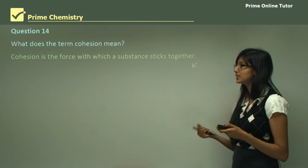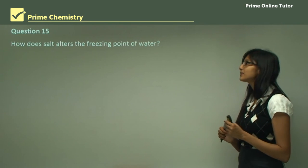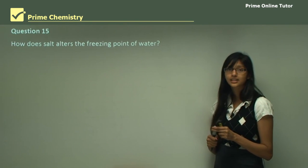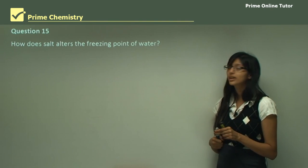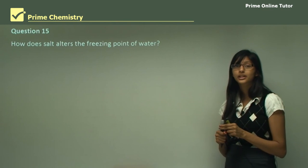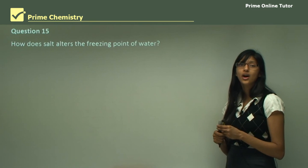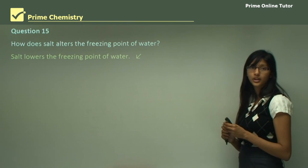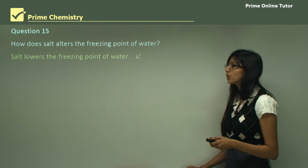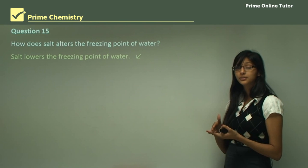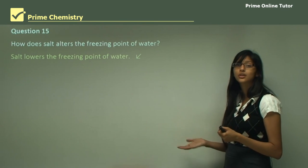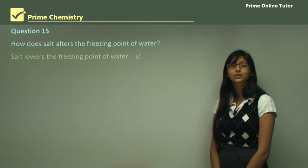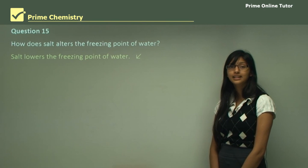Question 15 asks how salt alters the freezing point of water. Recalling our first-hand investigation, when we added salt to water, the boiling point increased from 100°C to around 102 or 103°C. Similarly, salt lowers the freezing point of water — when you add salt to water, it will freeze at a much lower temperature than 0°C. This brings us to the end of this lesson, in which we looked at surface tension and viscosity, their causes, and their properties in water.